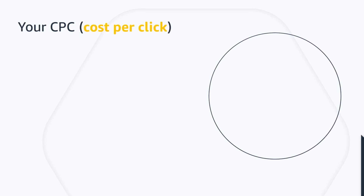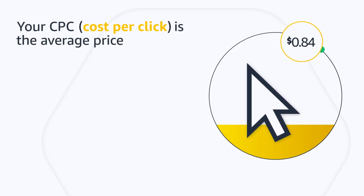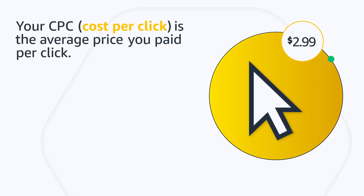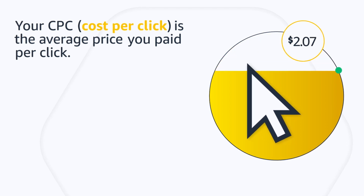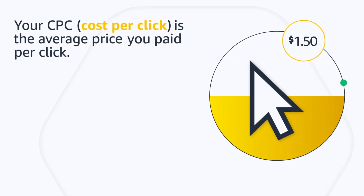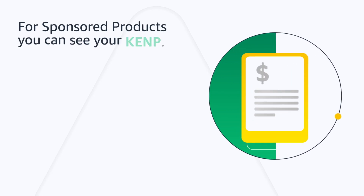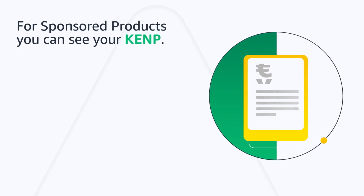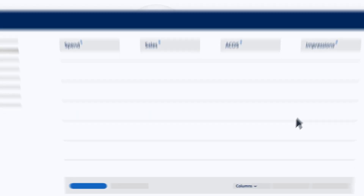CPC, or cost per click, is the average price you paid for a click on your ad. Lower CPC means your spend is working harder for you to convert customers. For sponsored products, you can also see Kindle Edition Normalized Pages — KENP — royalties or pages read.